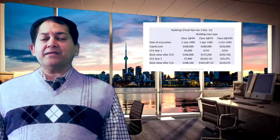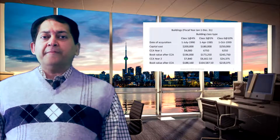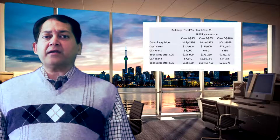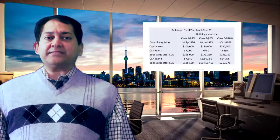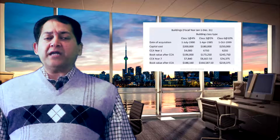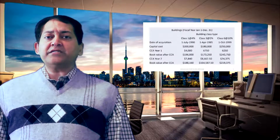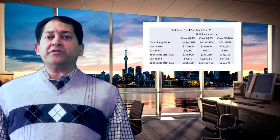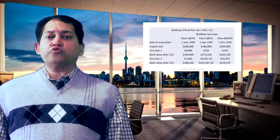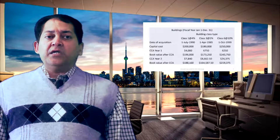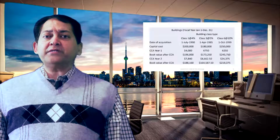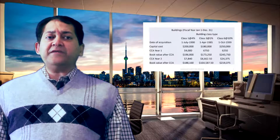Here is a practical example. We assume three types of buildings: class 1, class 3, and class 6. The date of acquisition for the class 1 building is July 1st 1990, for class 3 it is April 1st 1985, and for the class 6 building it is October 1st 1999. The capital costs are $200,000, $180,000, and $250,000 respectively.